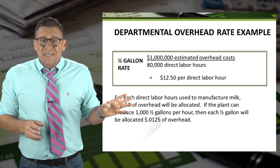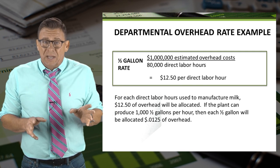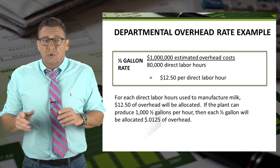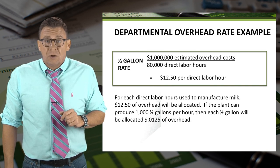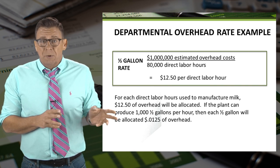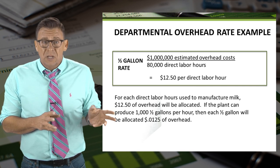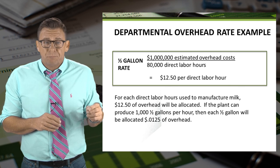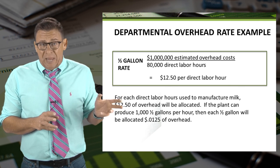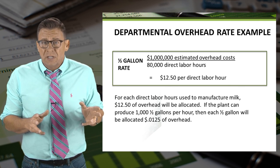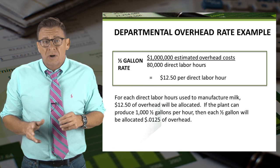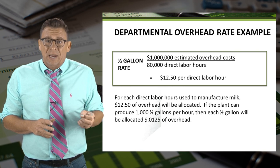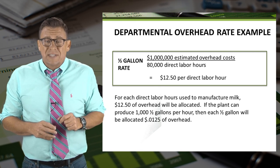We can see that half gallons will be allocated $12.50 of overhead per direct labor hour. For each direct labor hour used to manufacture milk, $12.50 of overhead will be allocated. If the plant produces 1,000 half gallons per hour, then each half gallon will be allocated one and a quarter cents of overhead.